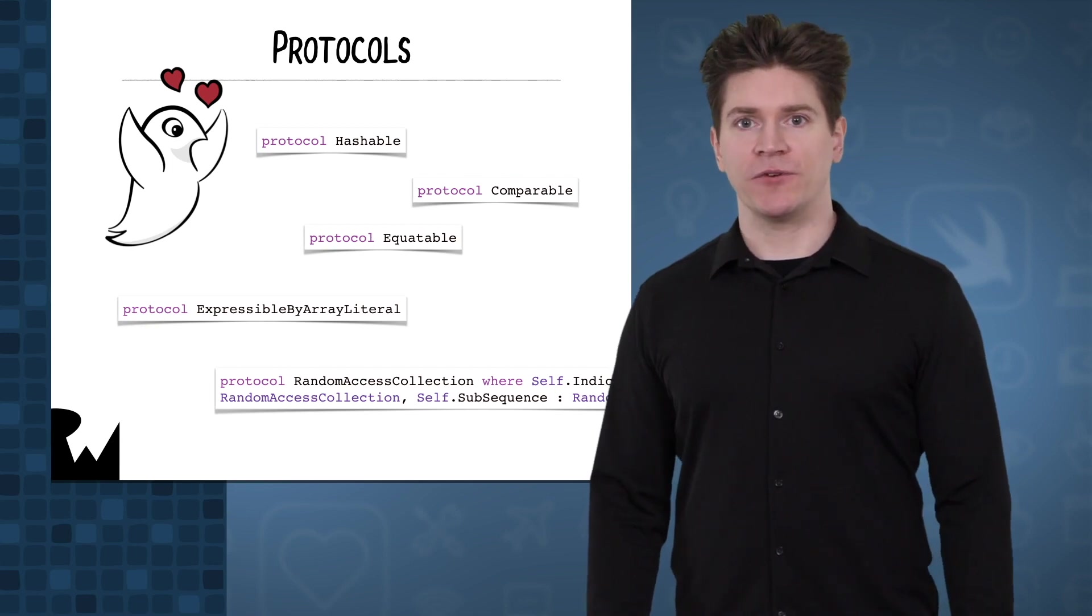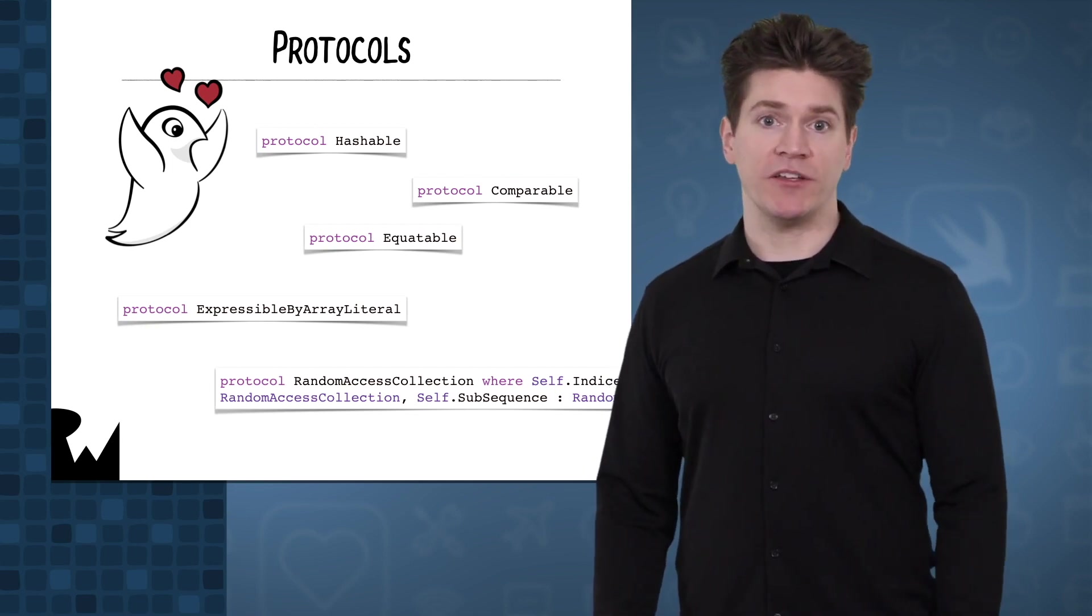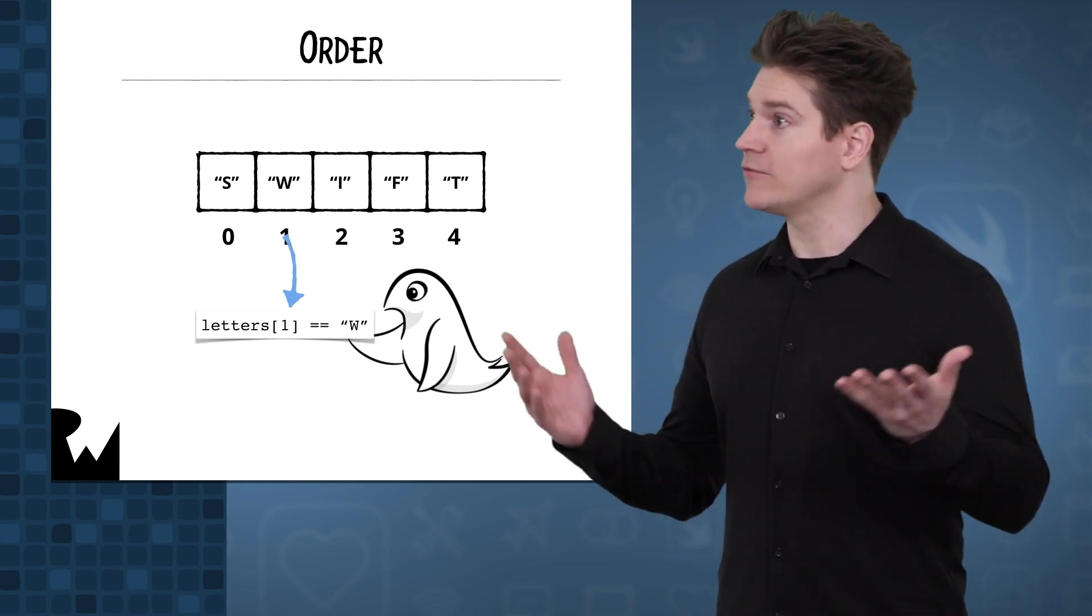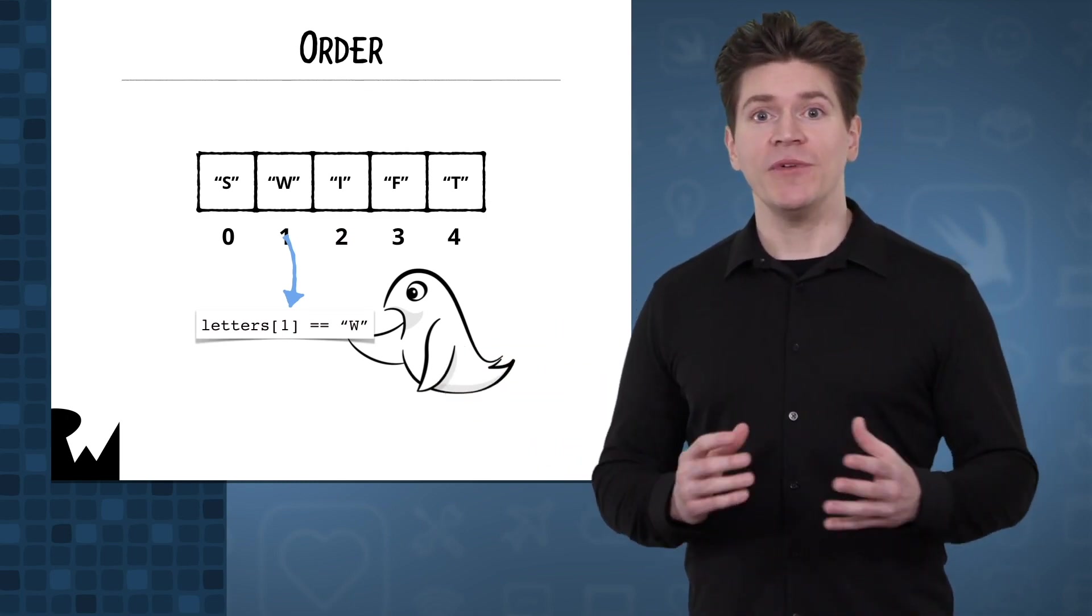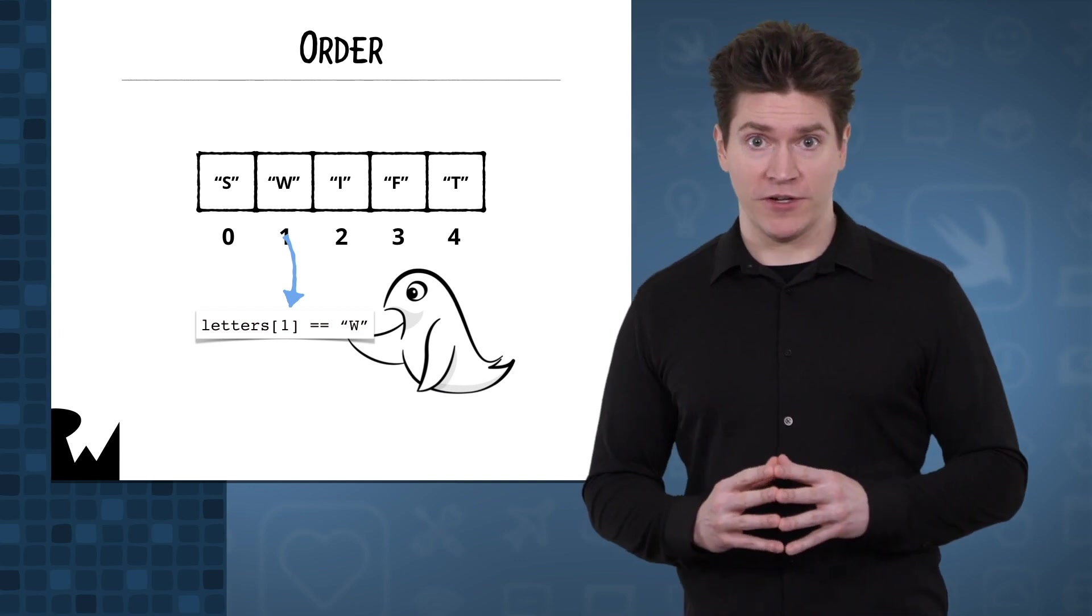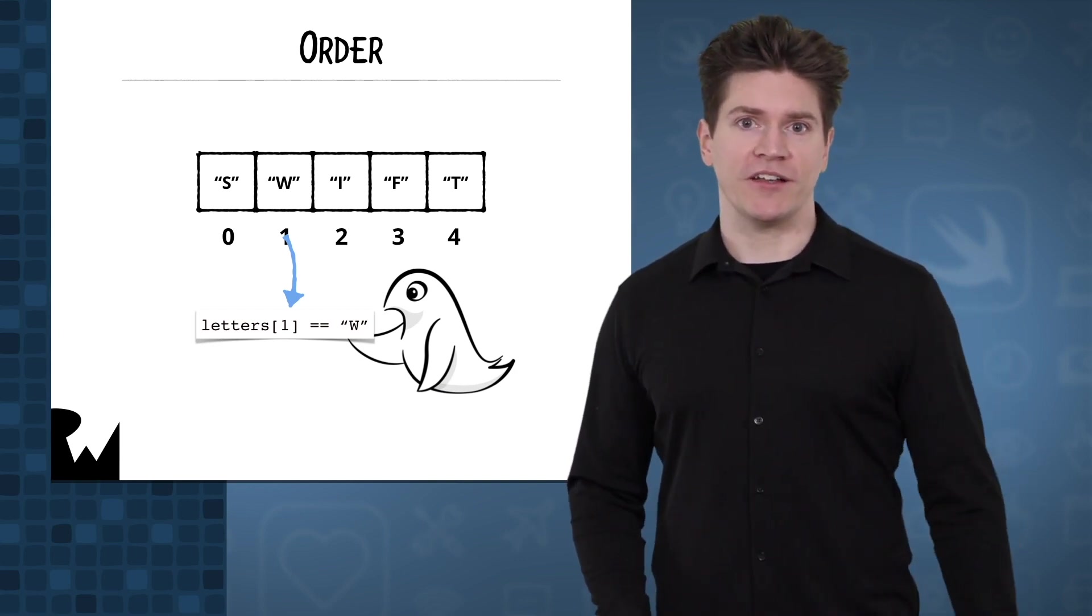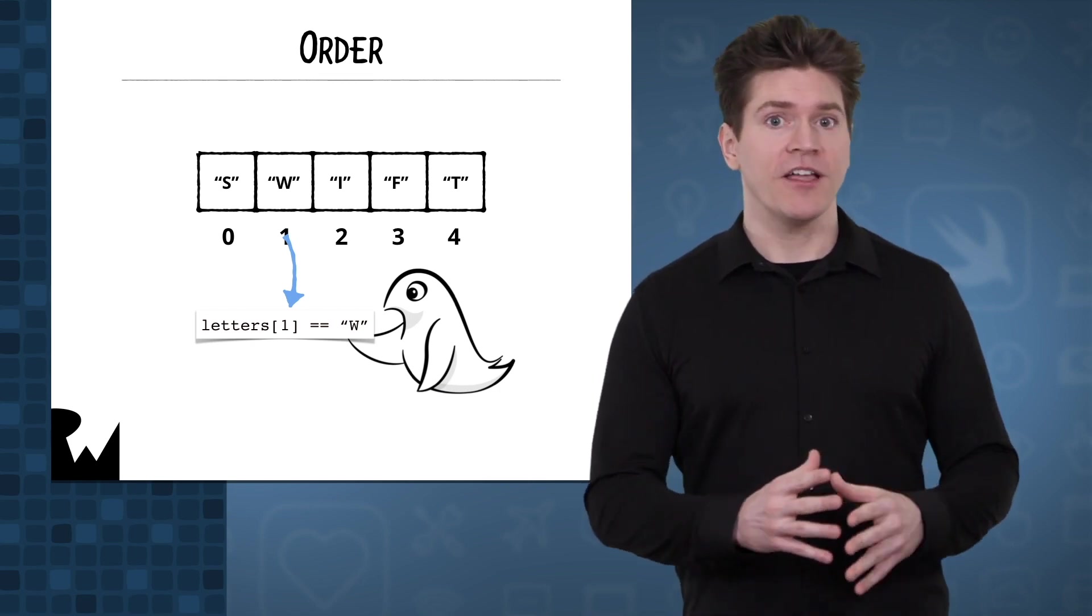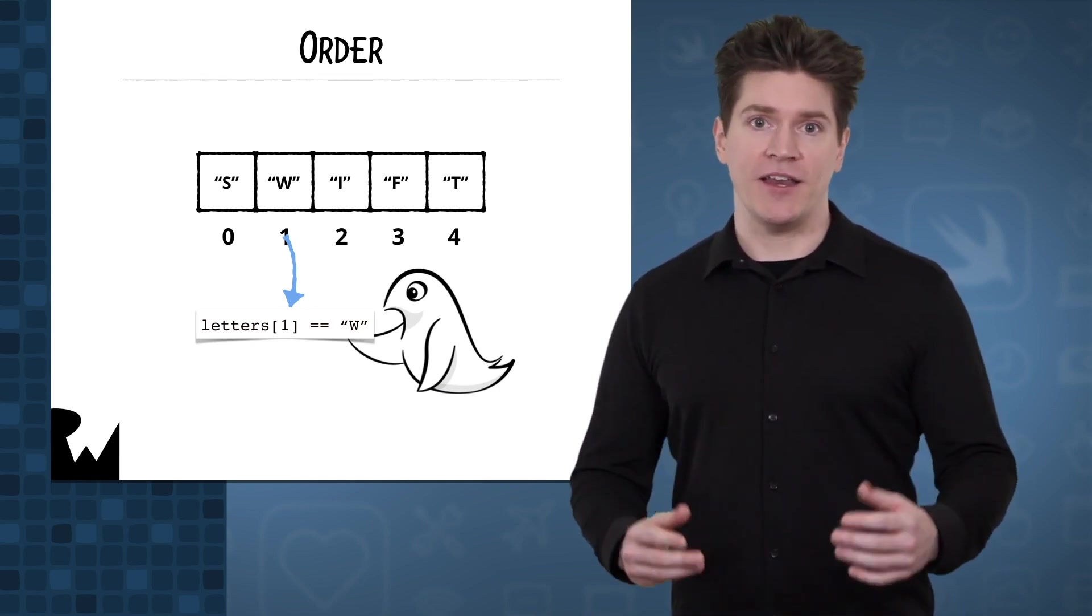When you're considering any data structure, there are some specific capabilities to be aware of. First, is the data structure ordered? How is it ordered? Elements in an array are explicitly ordered. Arrays use a zero-based index system to maintain that order, storing one element at each index and allowing you to access elements at any given index.